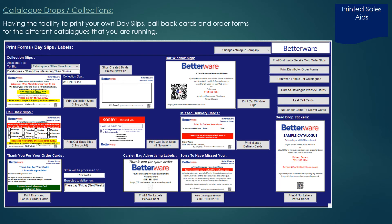There's also a stationery facility that allows you to print your own day slips, callback cards and order forms. You can print thank you for your order cards, and there are various stickers available — catalogue dead drop stickers, webshop labels for your catalogues, and all kinds of labels and stationery that help to make your Betterware business look professional to your customer.